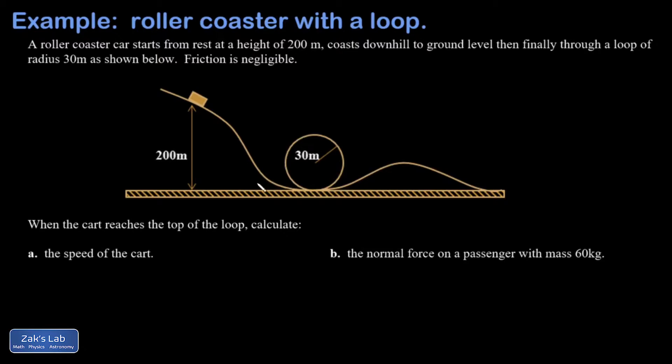And I'm interested in knowing when it reaches the top of the loop, what's the speed. So I'm going to put in a velocity vector that the roller coaster is moving to the left at that moment in time. And I'm trying to get the magnitude of that velocity. So this first question is really a conservation of energy question.